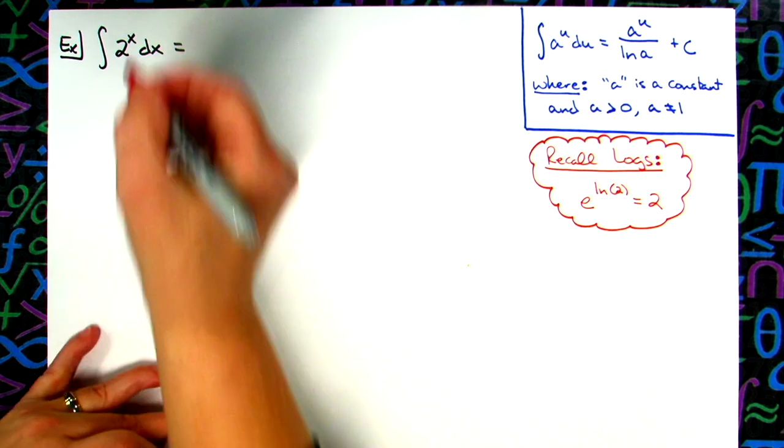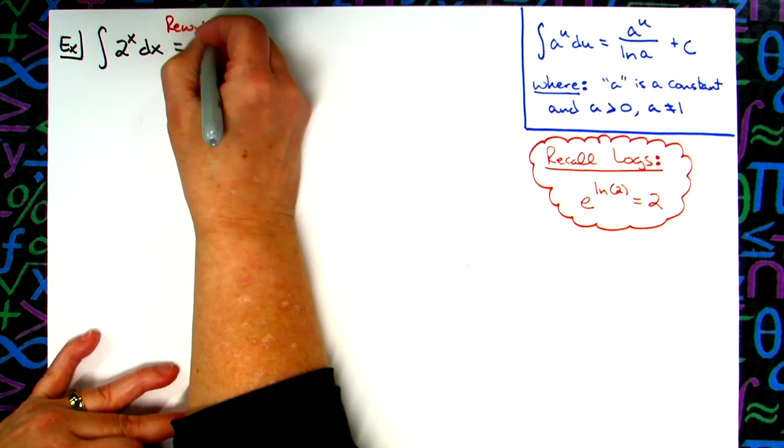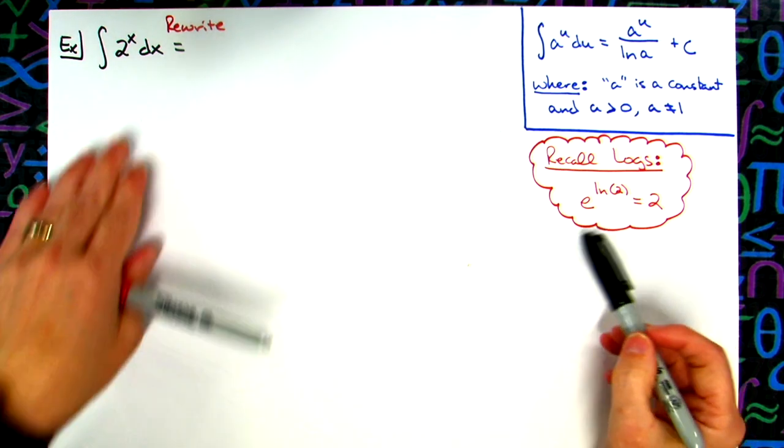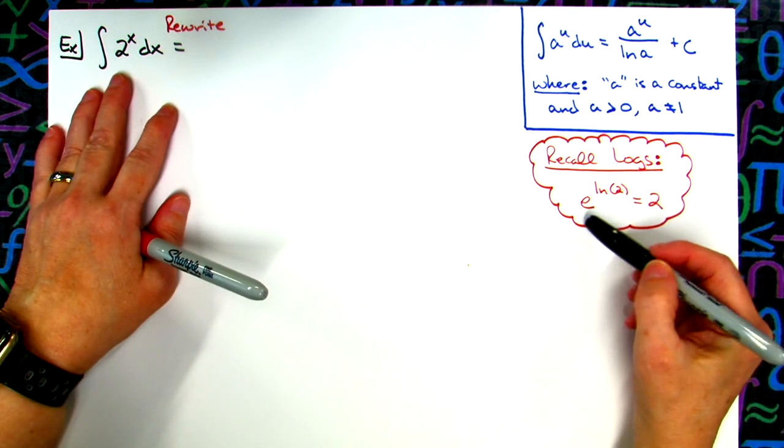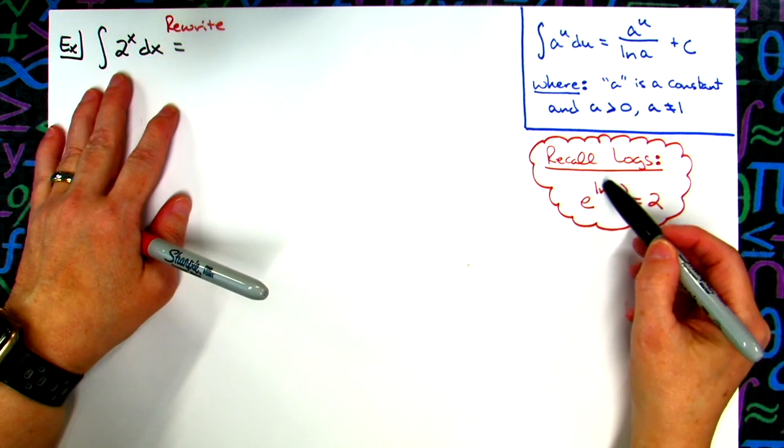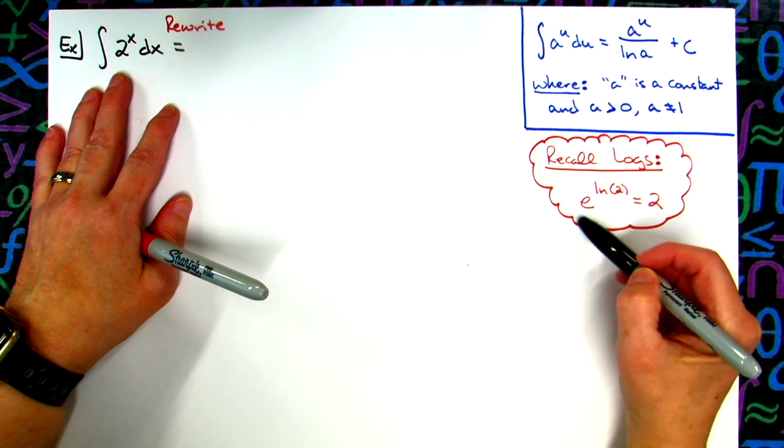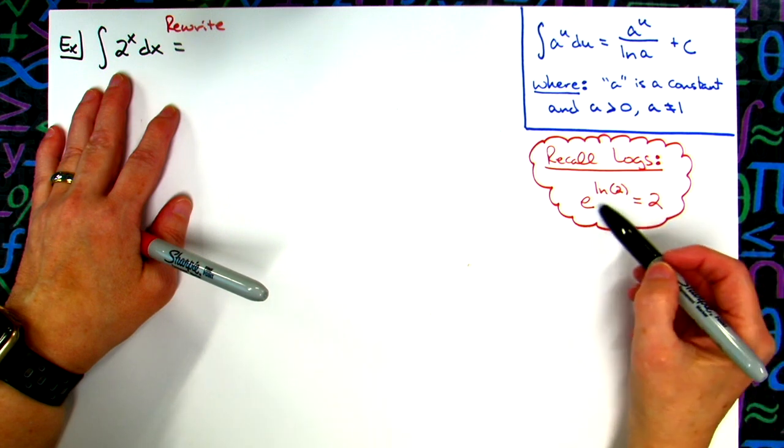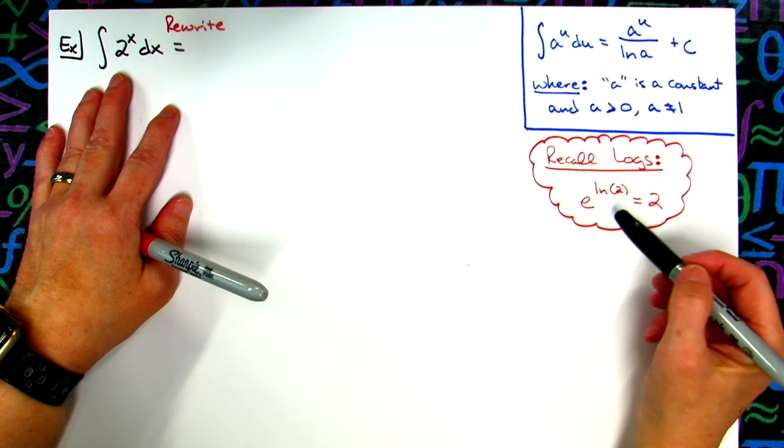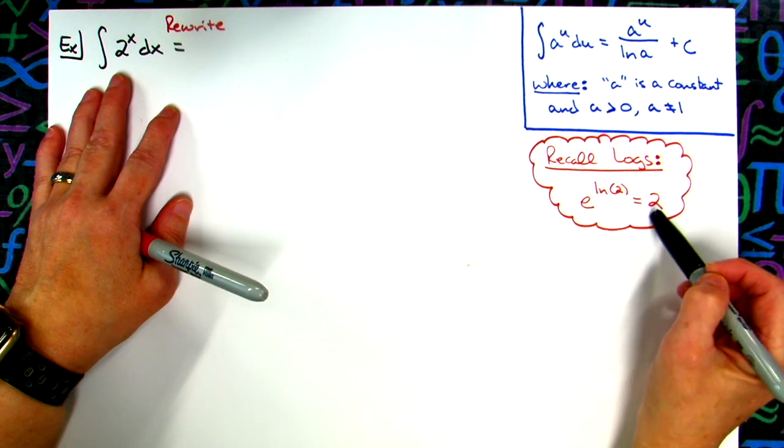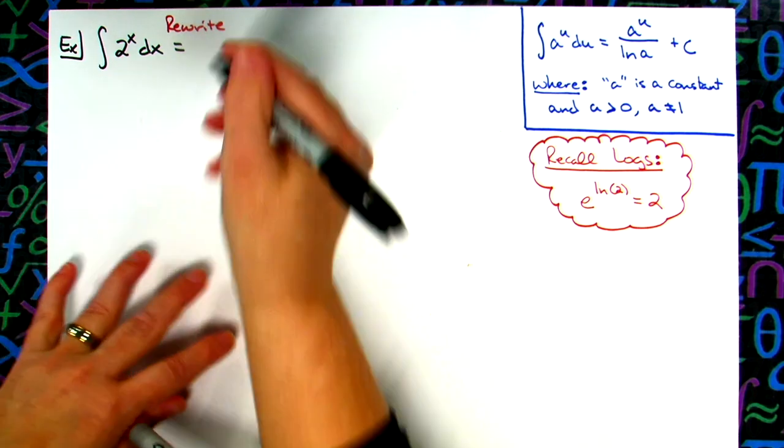So the first thing here that I want to do is I want to rewrite this into a different form. I have this over here as a review of logs, and I use two specifically because there's two in our problem here. When you have a base raised to a log, and the base on the log matches the base of the entire expression, then the answer is whatever you're taking the log of there. So my base of this whole entire expression is e, natural log has a base of e, so then that means this answer is just 2. That's something you would have to recall to be able to do this from your logs and log properties.